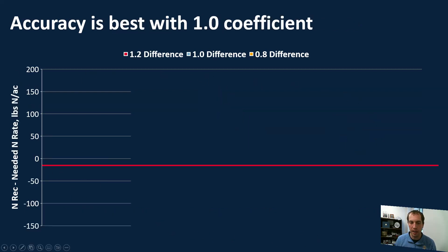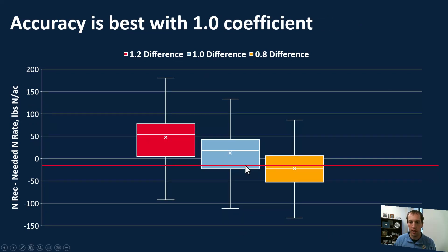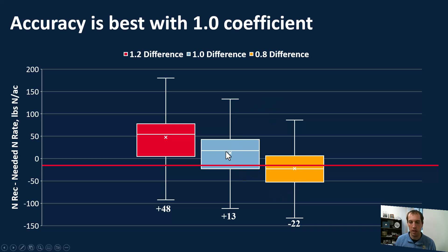Taking all the data together, as we go from 1.2 to 1.0 to 0.8, the overall average comes down toward zero and then below it. On average, with 1.2 we're about plus 48 pounds per acre; with 1.0 we're plus 13 pounds; and with 0.8 we're about minus 22 pounds. So with 1.0 we're still slightly overestimating but very close to zero, while 0.8 causes us to underestimate more than we overestimate. The data clusters most tightly around zero with the 1.0 multiplier.